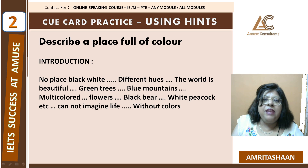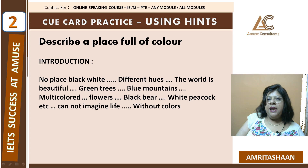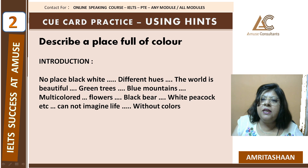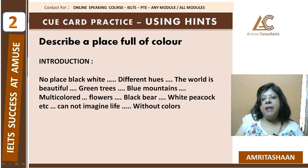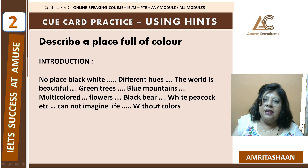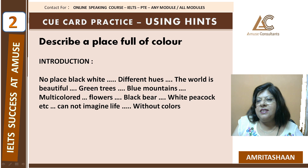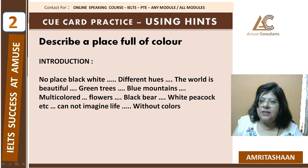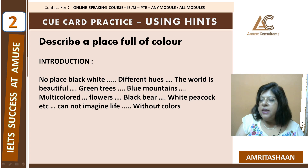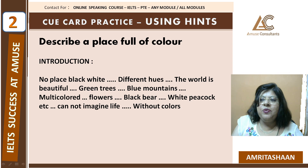So you will say: well, first of all, I want to tell that there is no place that is completely black and white. We can see different colors, different hues all around. The world is beautiful. We can see green trees, blue mountains, multi-colored flowers, black bear, white peacock. And the fact is that we cannot imagine life without colors. There are colors and colors all around. You can pause the video here, focus on the hints again, and practice for 30-40 seconds before continuing.